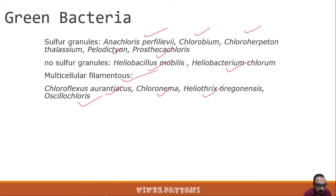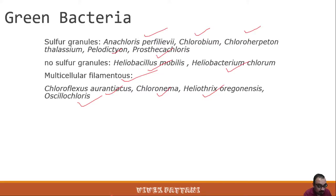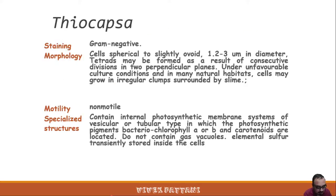Comparing with plants: chlorophyll A in plants has an absorption maximum of 680 to 685 nanometers. But bacterial chlorophyll A is around 850 to 910 nanometers. Bacterial chlorophyll B has 1020 to 1035 nanometers. Bacterial chlorophyll C ranges from 745 to 760 nanometers. Bacterial chlorophyll G ranges from 725 to 745 nanometers.